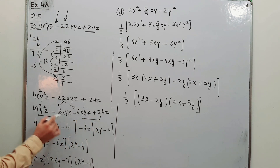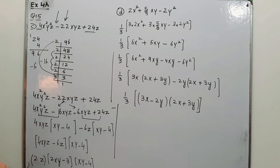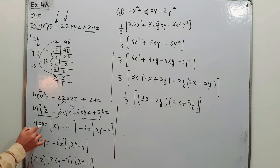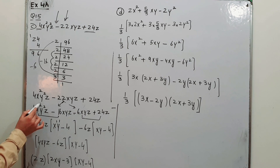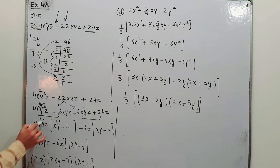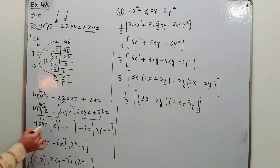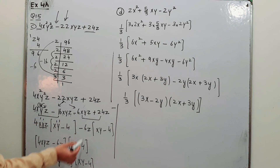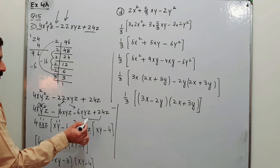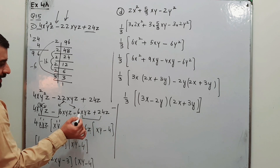From the first two terms take 4xyz as common: 4 is out, z is out, xy is out, and we are left with xy inside the bracket — because out of the powers of x and y, one power is taken out each. So 4xyz times (xy minus 4).